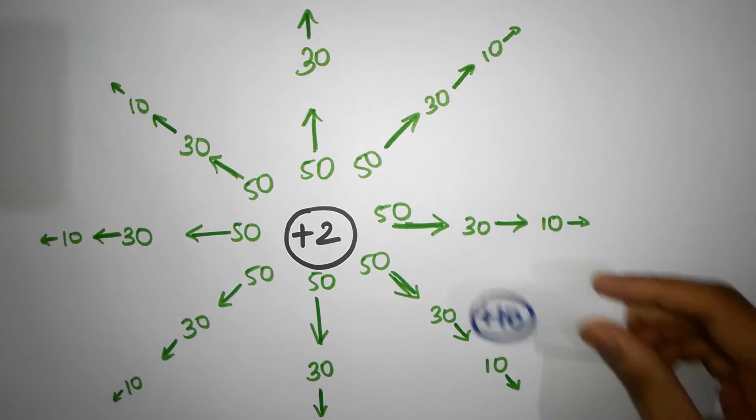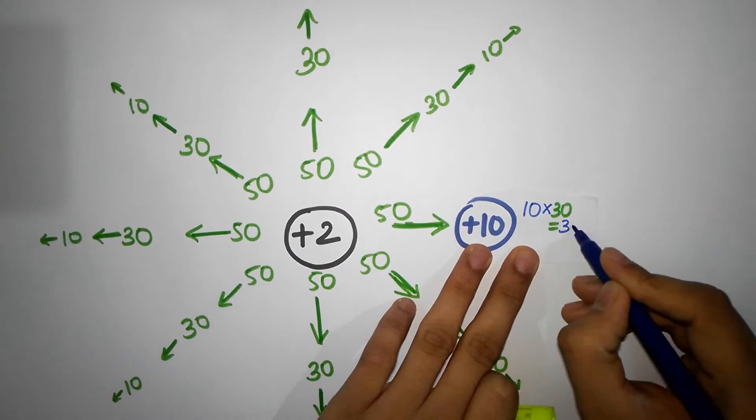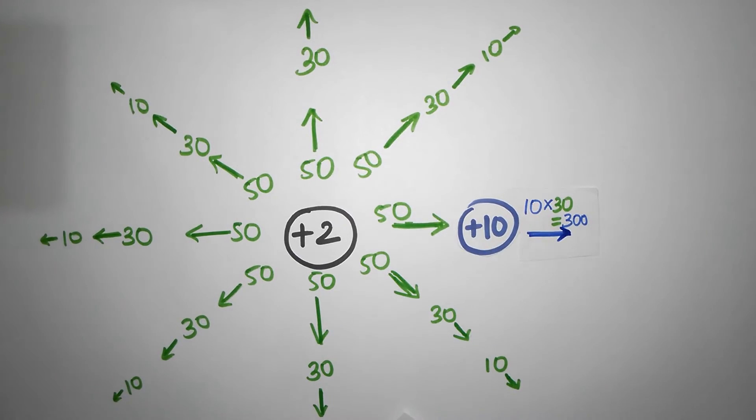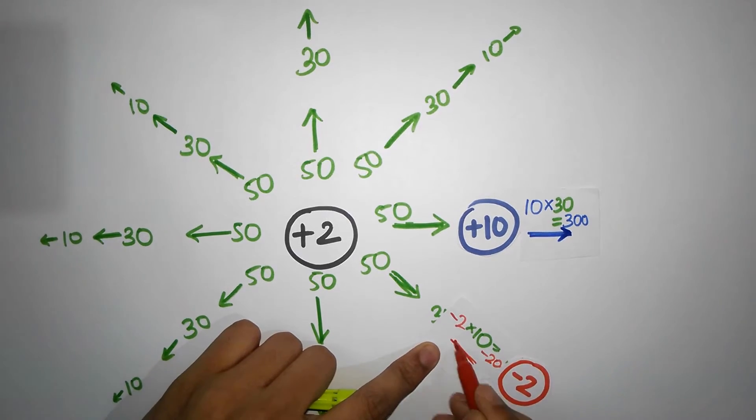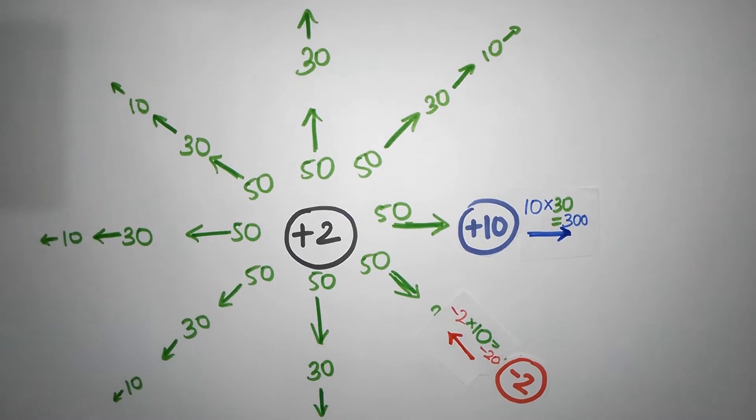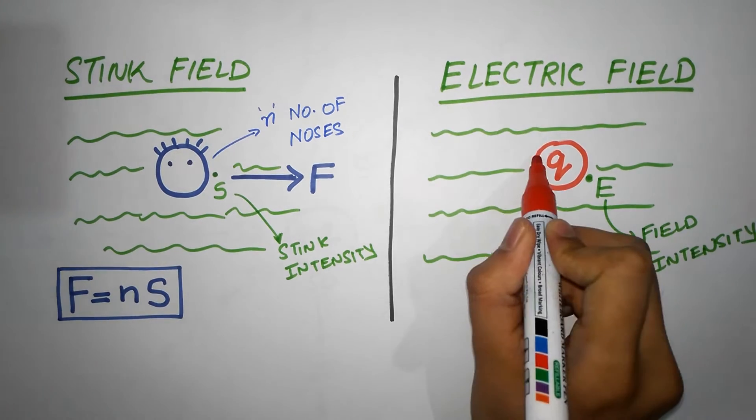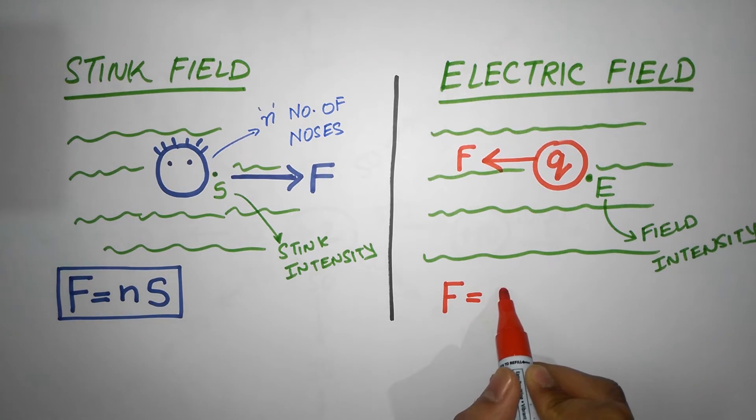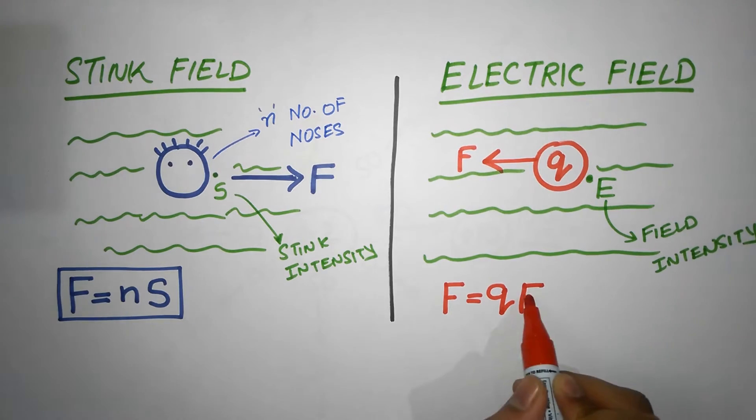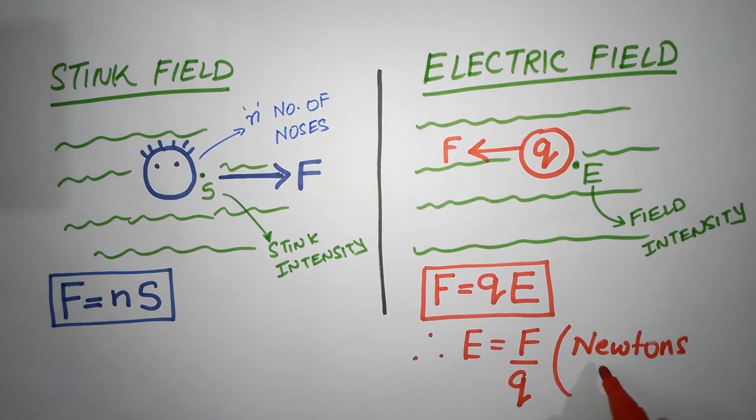So a plus 10 coulomb charge in 30 units of electric field experiences 10 times 30, 300 newtons of force, and a minus two coulomb charge in 10 units of electric field experiences minus two times 10, which is minus 20 newtons, meaning 20 newtons in the opposite direction of the field. So in general, we could say a charge of q coulombs at any point where the electric field is E will experience f equals the number of noses, I mean charge q, times the electric field intensity E, where E is the field intensity. It's just newtons per coulomb.